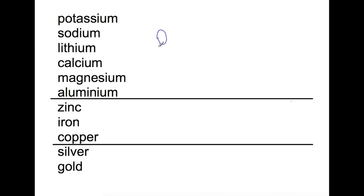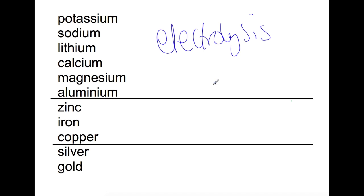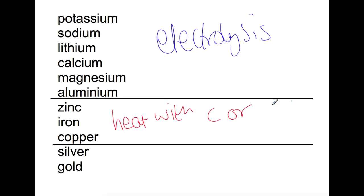Aluminium and above require electrolysis. This is where we take electricity and we split the positive metal ion away from the negative, usually oxygen ion. The middle section, linked to copper, requires heating with carbon or carbon monoxide to be extracted. And then finally silver and gold — if they are combined with anything — you can simply heat them up and they will be extracted by heat alone.